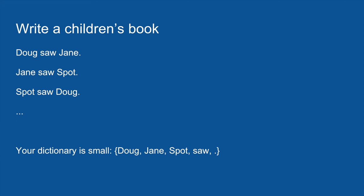So this is a nice simple example showing recurrent neural networks. Now, to show how they don't meet all of our needs, we're going to write a children's book with sentences of the format: 'Doug saw Jane. Jane saw Spot. Spot saw Doug.' Our dictionary is small — just the words Doug, Jane, Spot, saw, and a period. The task of the neural network is to put these together in the right order to make a good children's book.